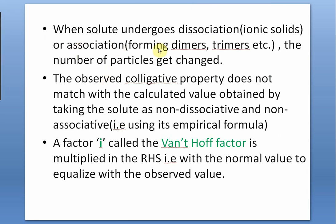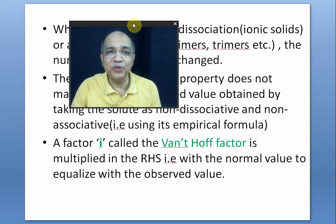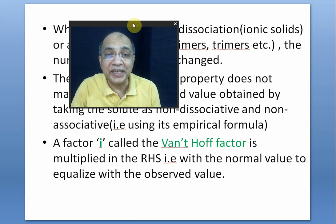When solute undergoes dissociation — like ionic solids — or association — for example aluminium chloride forms a dimer Al₂Cl₆, beryllium chloride exists as Be₂Cl₄, or benzoic acid dimerizes to form (C₆H₅COOH)₂ — one Be₂Cl₄ does the same role as one BeCl₂ monomer would have done had there been no dimerization. Similarly, the monomer C₆H₅COOH would do the same job as the bulky dimer.